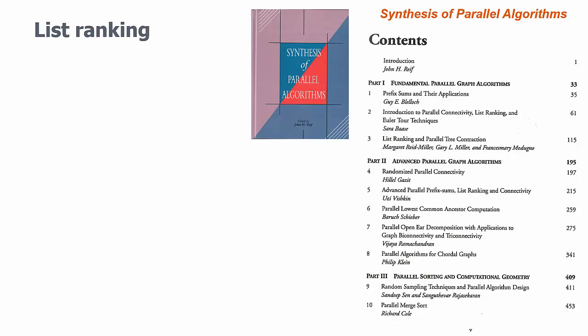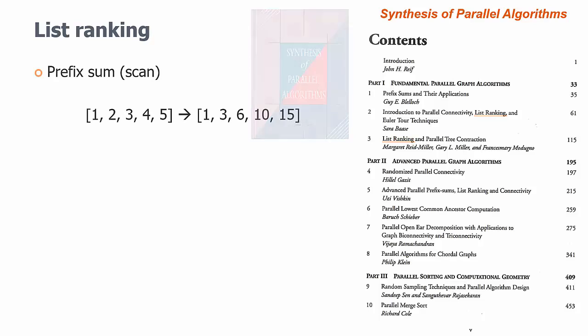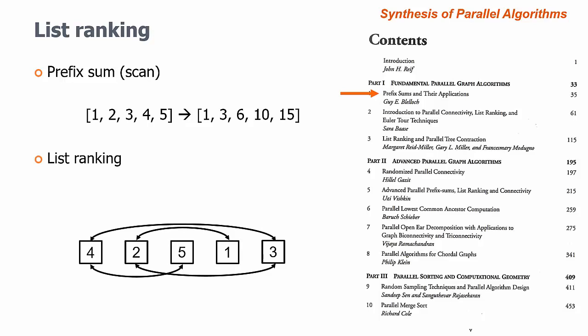one of the most useful parallel algorithms in practice. Like in synthesis of parallel algorithms, list ranking is discussed in the second and the third sections. We know that prefix sum is like the backbone of parallel algorithms. List ranking does the same as prefix sum, but assumes input as a linked list.